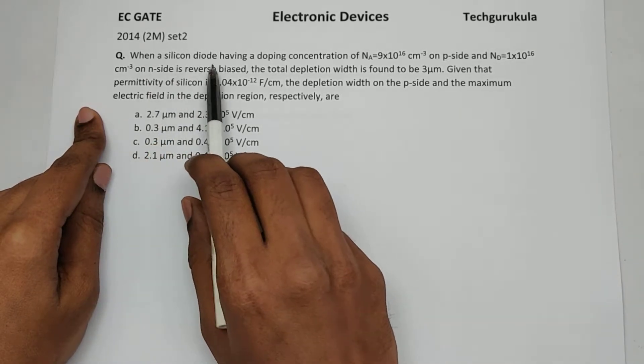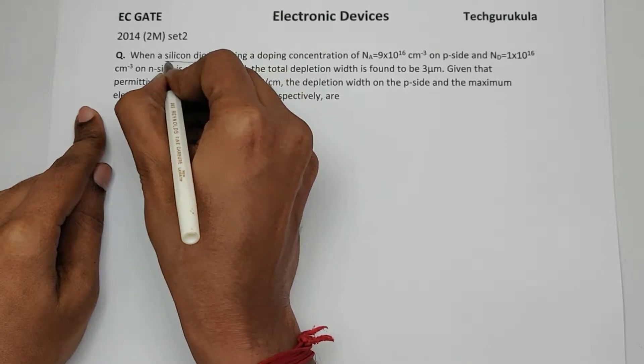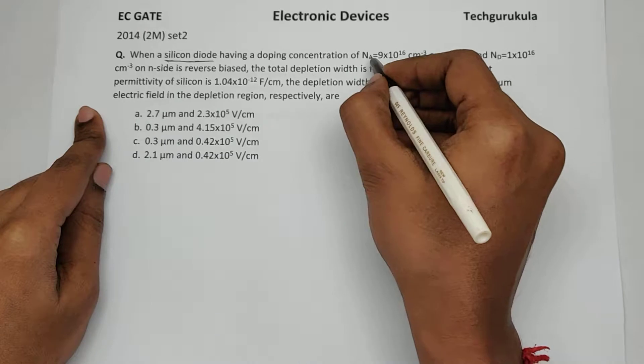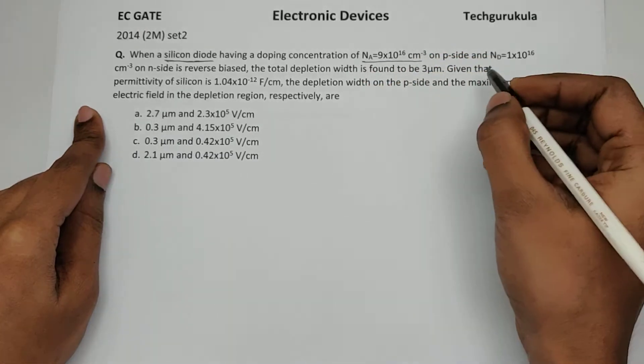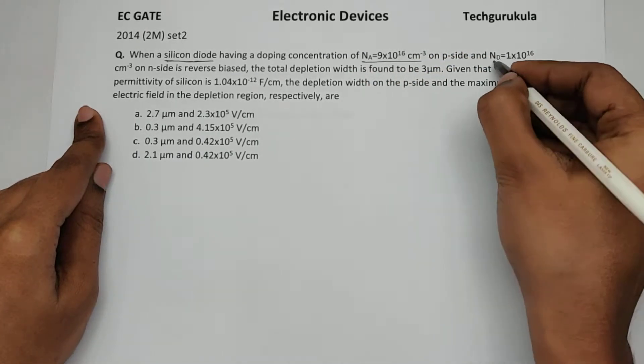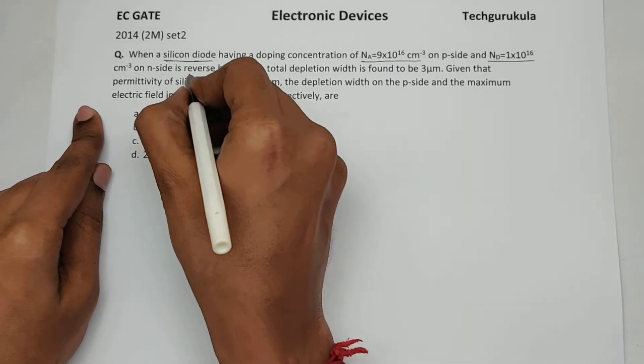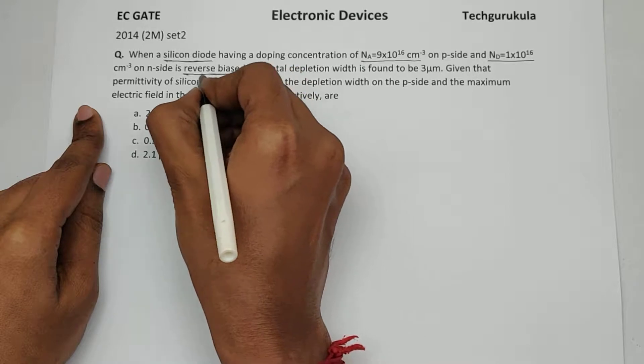When a silicon diode having a doping concentration of Na of 9 times 10 power 16 on P side and Nd of 1 times 10 power 16 per centimeter cube on N side is reverse biased.